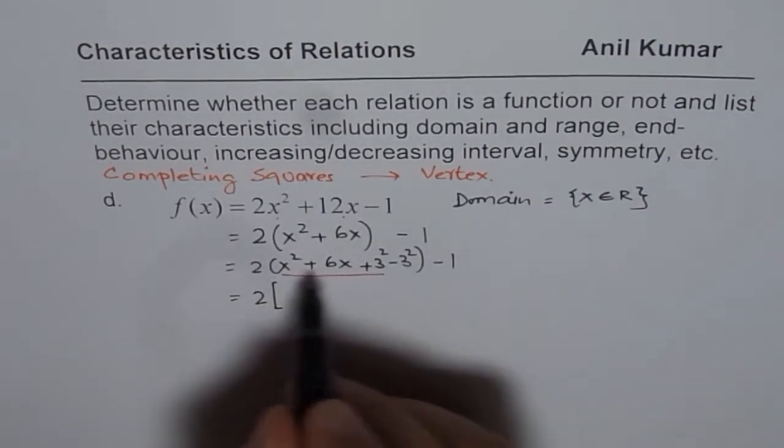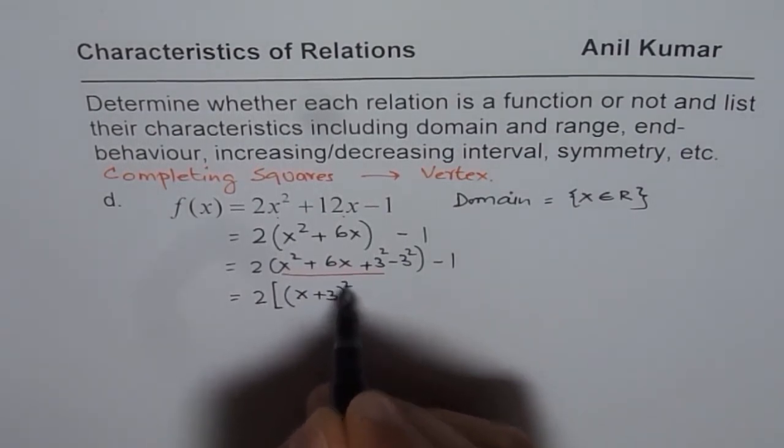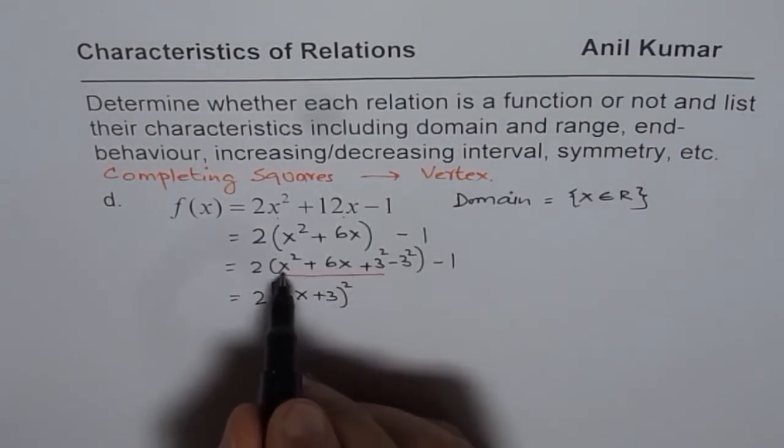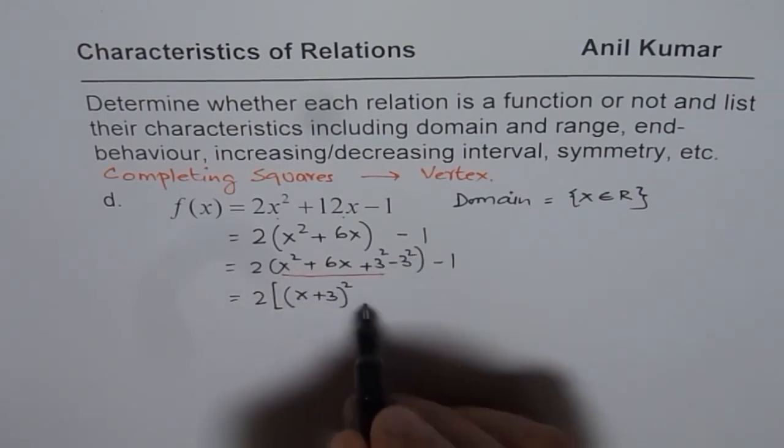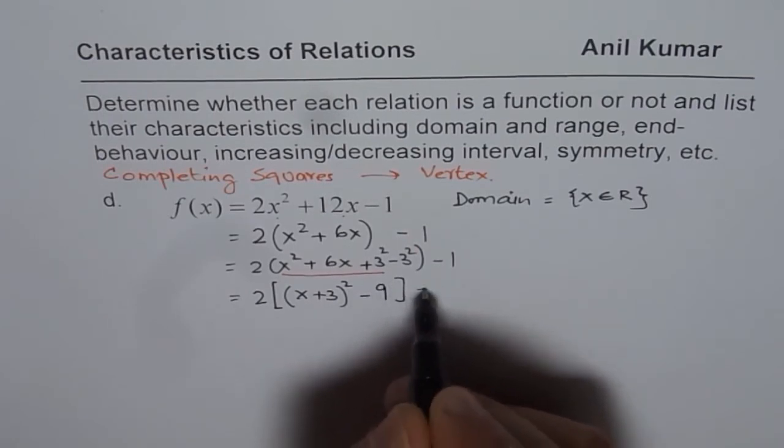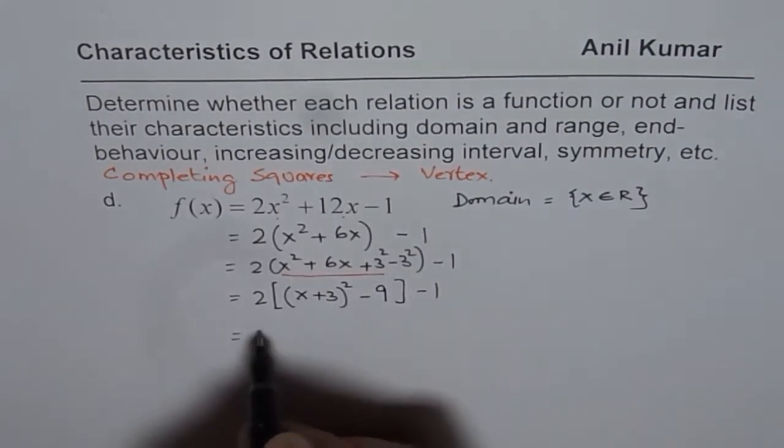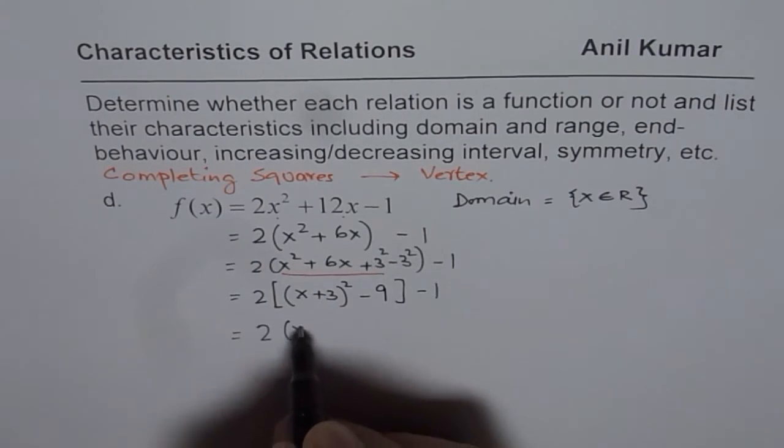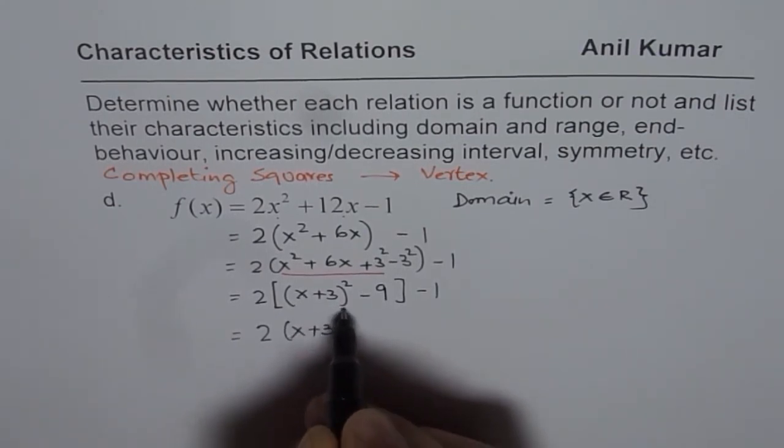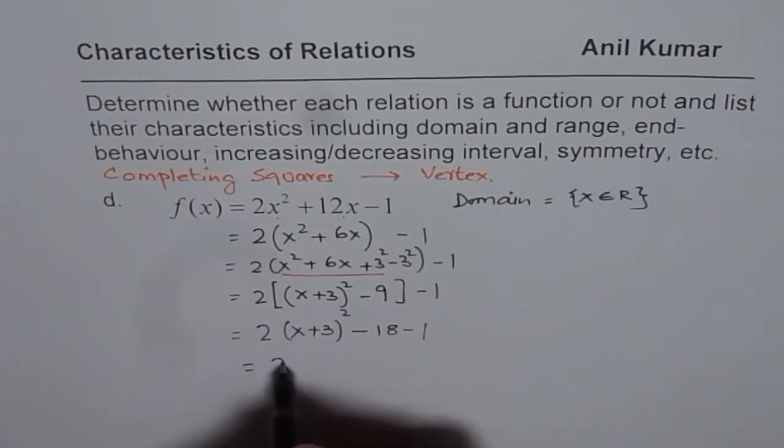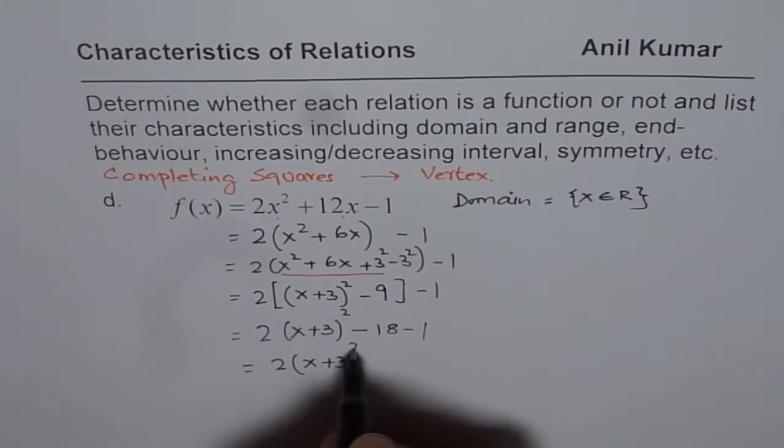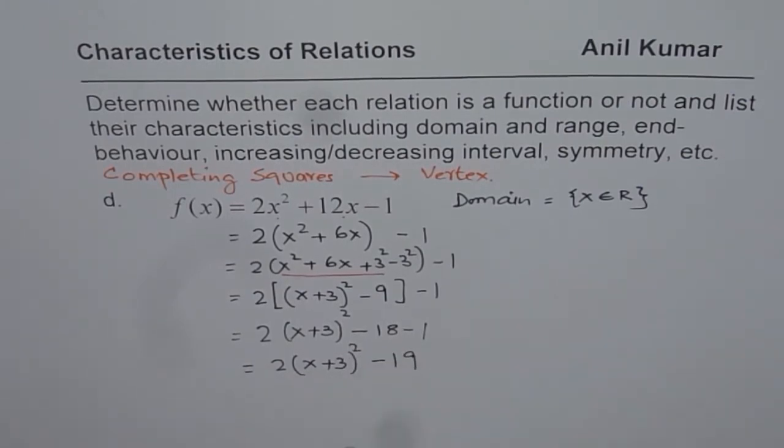So they form perfect squares. Let me use a square bracket. Since we are using two types of brackets here, (x + 3)² is the first 3 terms, a² + 2ab + b². So that is how you get this. Minus 3² is -9, -1. We can open this bracket. So we get 2(x + 3)² - 18, -1. Or, we get 2(x + 3)² - 19.